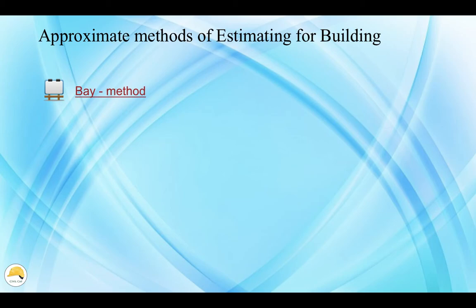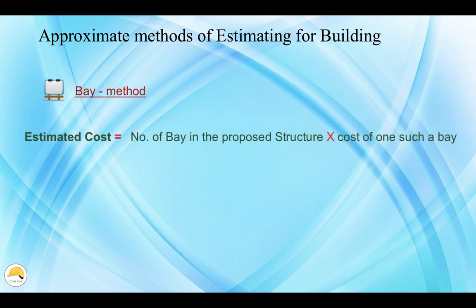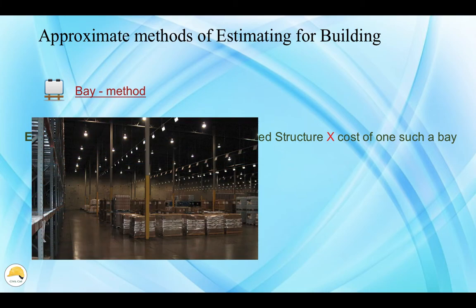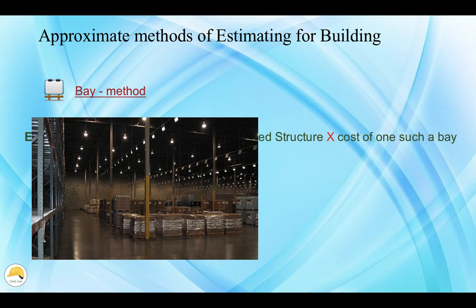The next method is the Bay method. In this method, a single bay is a similar repeated item. The bay method means one bay can be multiplied across similar bays to get the total cost. For example, these are go-downs, railway platforms, and factory sheds — similar to small repeated portions. There are two columns and beams with a roof over each portion. We calculate the rate of a bay and multiply by the number of bays.